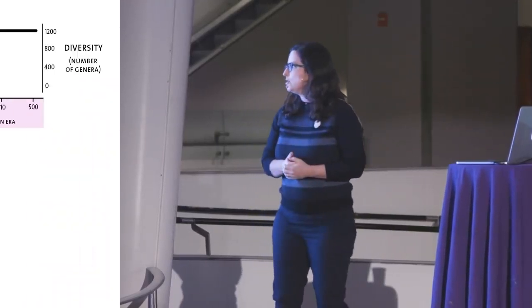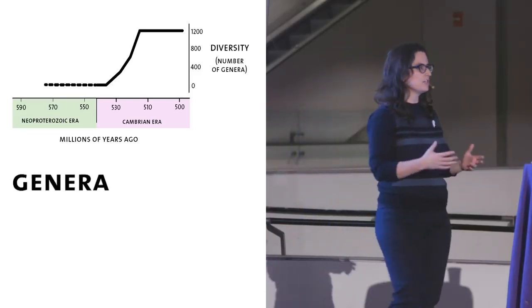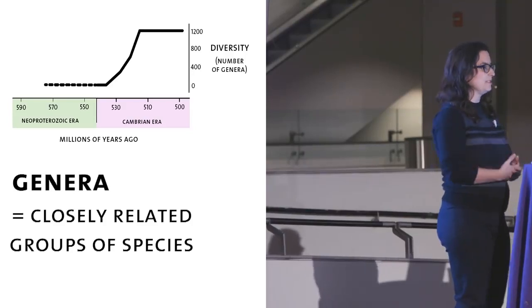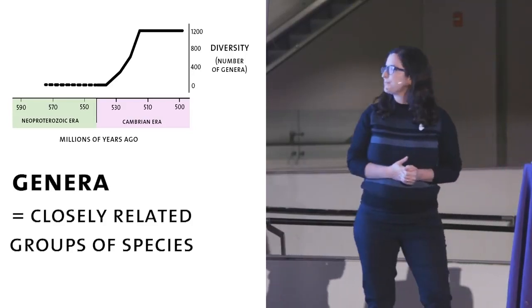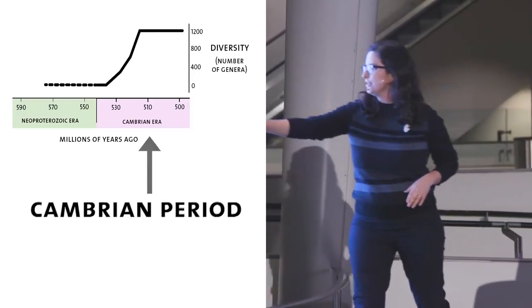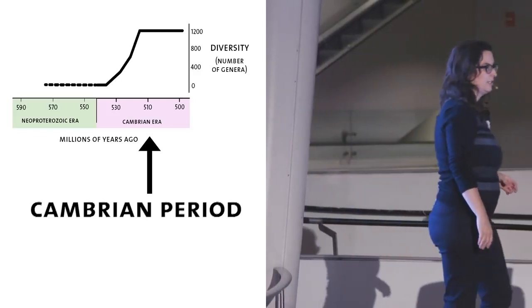The other thing that's going on is that the numbers of these different animals is increasing. So this is a graph that shows the increase in the number of genera. Genera are just very closely related groups of species, animal species in this case. The number of genera is increasing during this period, during the Cambrian, from about 530 million years to 500 million years ago.